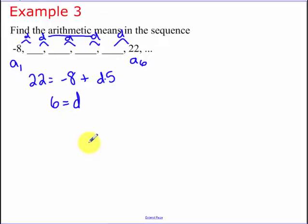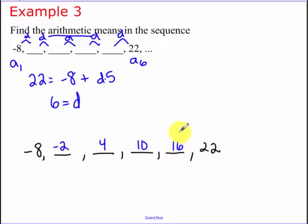So now I know my common difference is 6. So now it's just a matter of filling in. So I add 6. That's going to be a negative 2. I add 6, I get 4. Add 6, I get 10. Add 6 again, I get 16. Make sure when you add 6 again, you get 22.